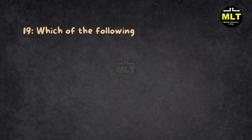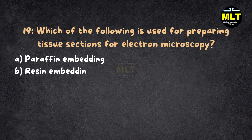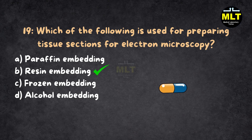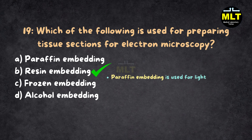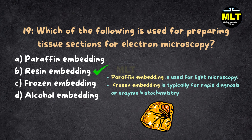Question 19: Which of the following is used for preparing tissue sections for electron microscopy? Options: A. Paraffin embedding, B. Resin embedding, C. Frozen embedding, D. Alcohol embedding. Correct Answer: B. Resin embedding. Explanation: Resin embedding is used for electron microscopy to preserve tissue at the ultrastructural level, ensuring that cellular details remain intact. Paraffin embedding is used for light microscopy, and frozen embedding is typically for rapid diagnosis or enzyme histochemistry. Resin is the heavy hitter in electron microscopy.